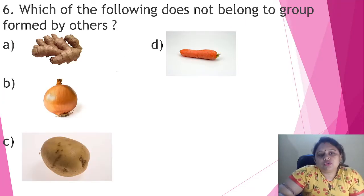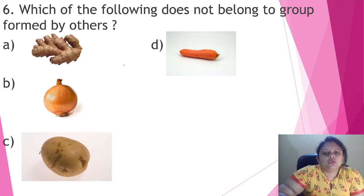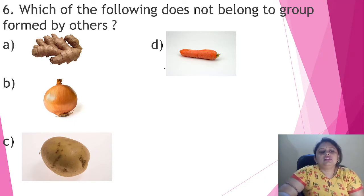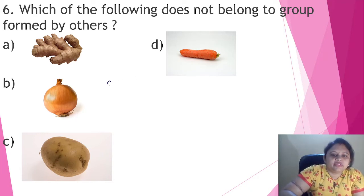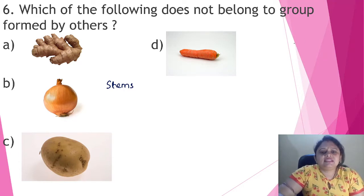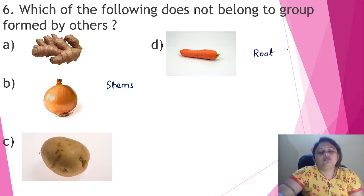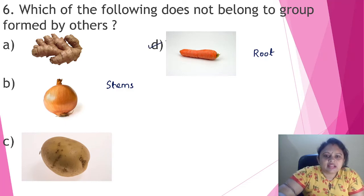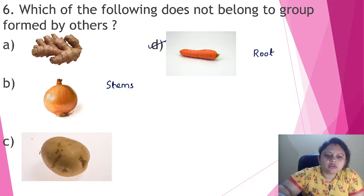Which of the following does not belong to the group formed by others? Ginger, onion, and potato are all modified stems. But radish is a modified root, so it does not belong to the group of the others. The correct answer is option D, that is radish.